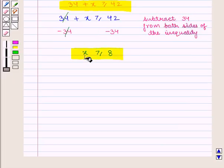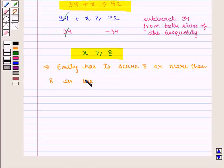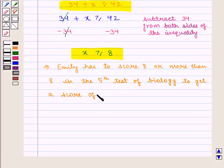Therefore we get x should be greater than or equal to 8, which implies that Emily has to score 8 or more than 8 in the 5th test of biology to get a score of 42 or more than 42.